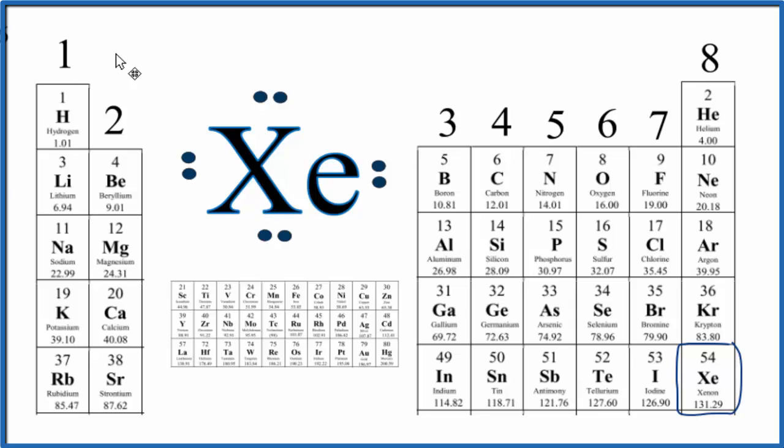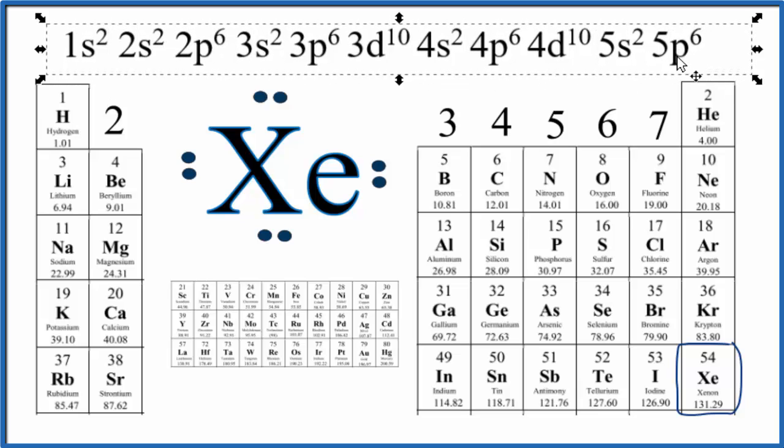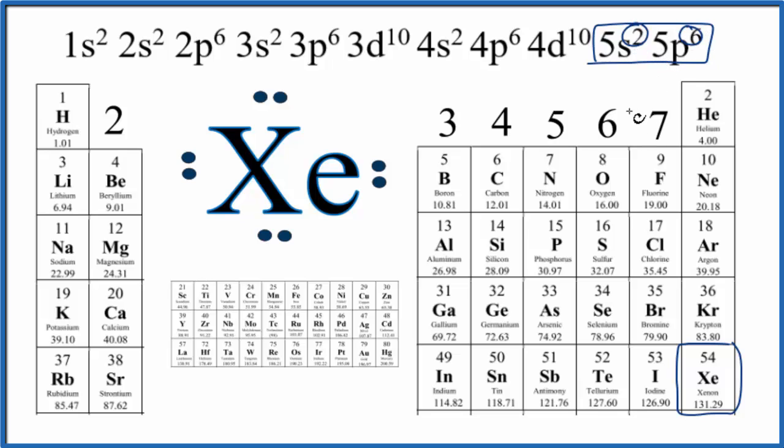We could also look at the electron configuration for xenon and that would help us understand the Lewis structure as well. So when we look at the electron configuration, the highest energy level, that's the 5 here, has 2 plus 6. It has 8 valence electrons. And that's what we saw when we looked at the periodic table.